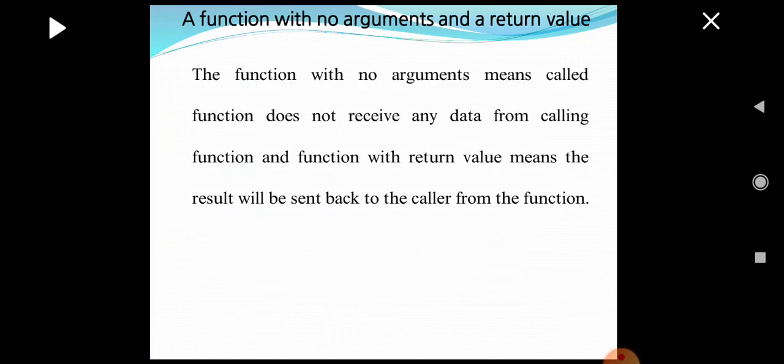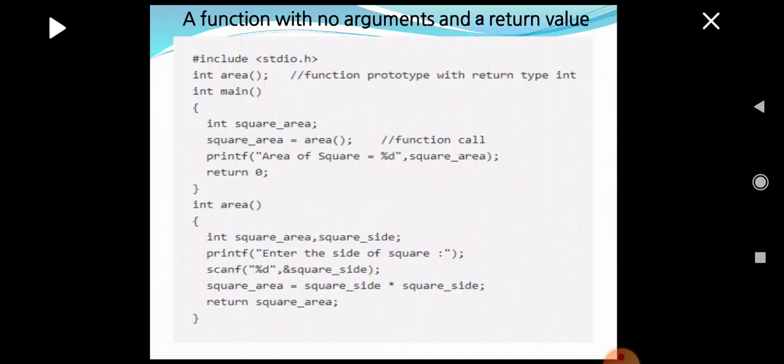The next prototype is a function with no argument and a return value. No argument means the called function does not receive any data from the calling function, but with a return value, the result will be sent back to the caller from the function. In this program, the statement square_area = area() makes the function call with no argument. In the function definition, after getting input from the user through the variable square_side, the final result stored in square_area is returned to the calling function — so we have a return value but no argument.